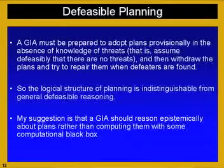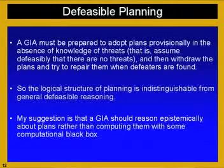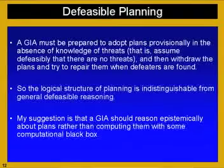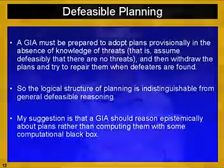The logical structure of planning becomes indistinguishable from general defeasible reasoning. My suggestion is that a GIA should reason epistemically and defeasibly about plans rather than computing them with some computational black box. I've built a defeasible classical planner, and what I'm working on now is a defeasible decision-theoretic planner — though that's a promissory note at this point.